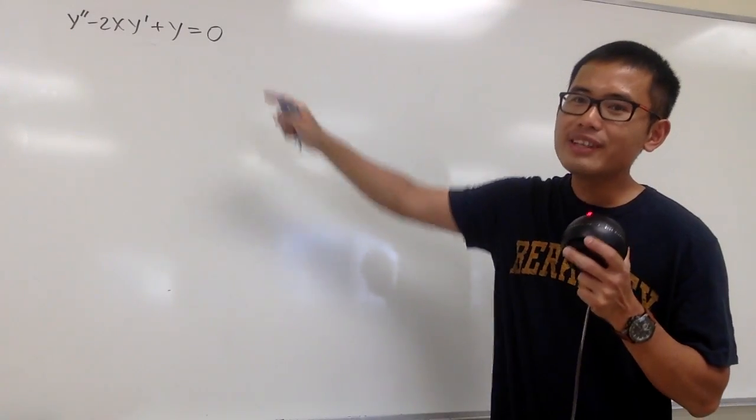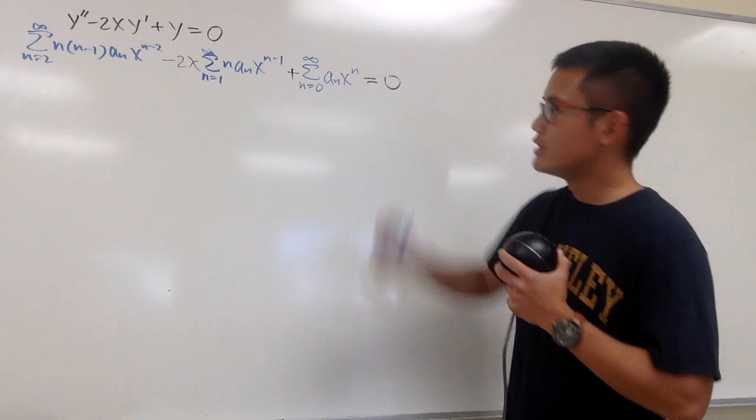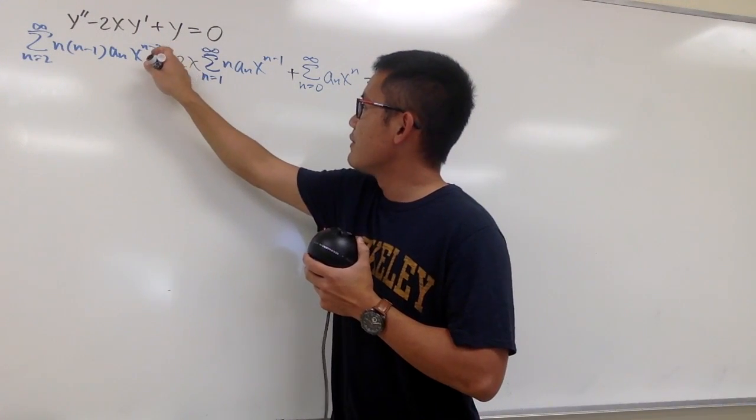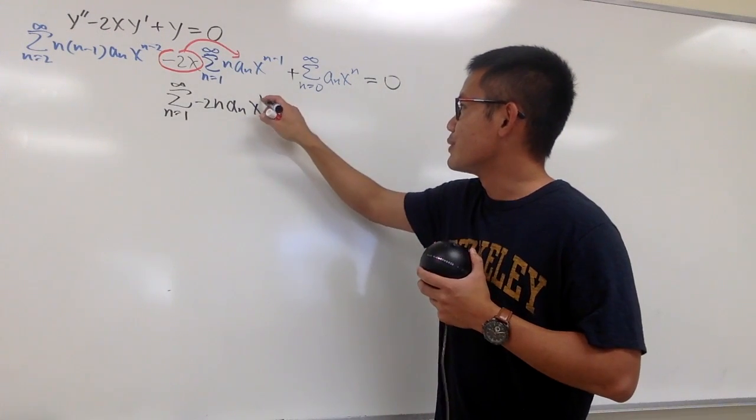Okay, we'll be solving this differential equation with power series. All this is equal to zero. Right here, we notice that we have the negative 2x, we can multiply this with that, 1 plus n minus 1, which is just n.